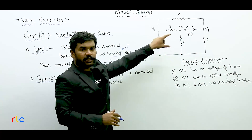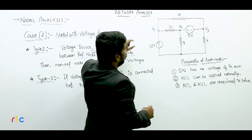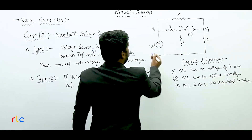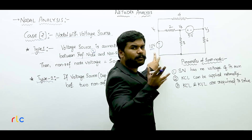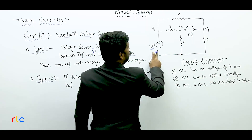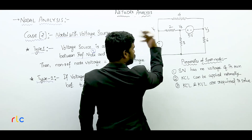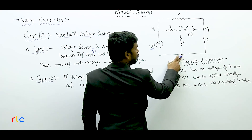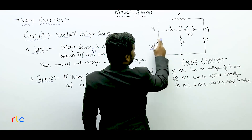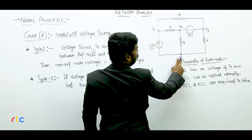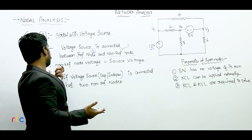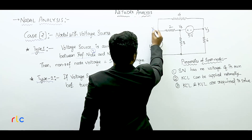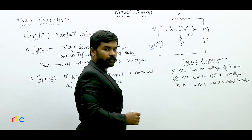We have to understand the network. What I want to say is, I want to know node 1. Here, there is a source of 10 volts. This is node number 1 — is it reference or non-reference? Obviously, it is non-reference node. Non-reference node voltage equals the source voltage. So the non-reference node here is V1. What is V1 voltage? It is equal to 10 volts. Yes.